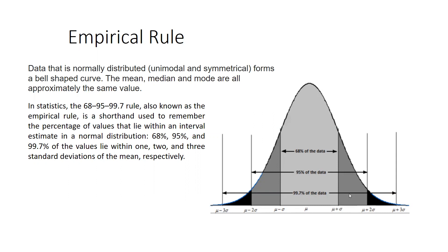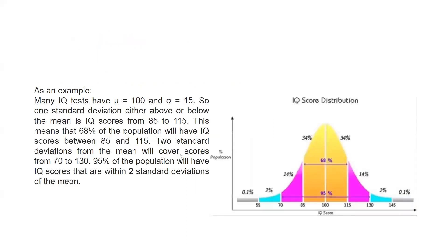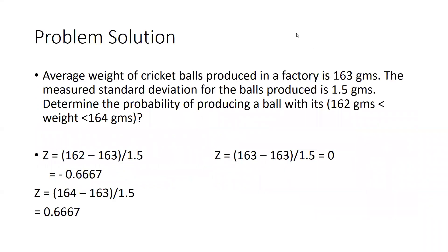Now I'm facing one important numerical problem — how we will get the solution. The question is: the average weight of cricket balls produced in a factory is 163 grams, and the measured standard deviation is 1.5 grams. We need to determine the probability of producing a ball weighing less than 162 grams, equal to 163 grams, and greater than 164 grams.